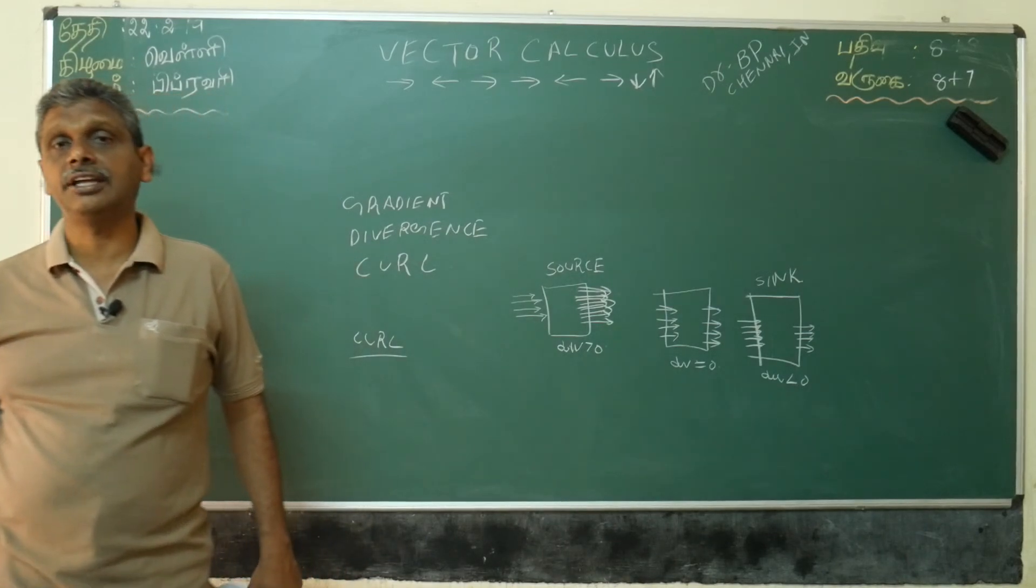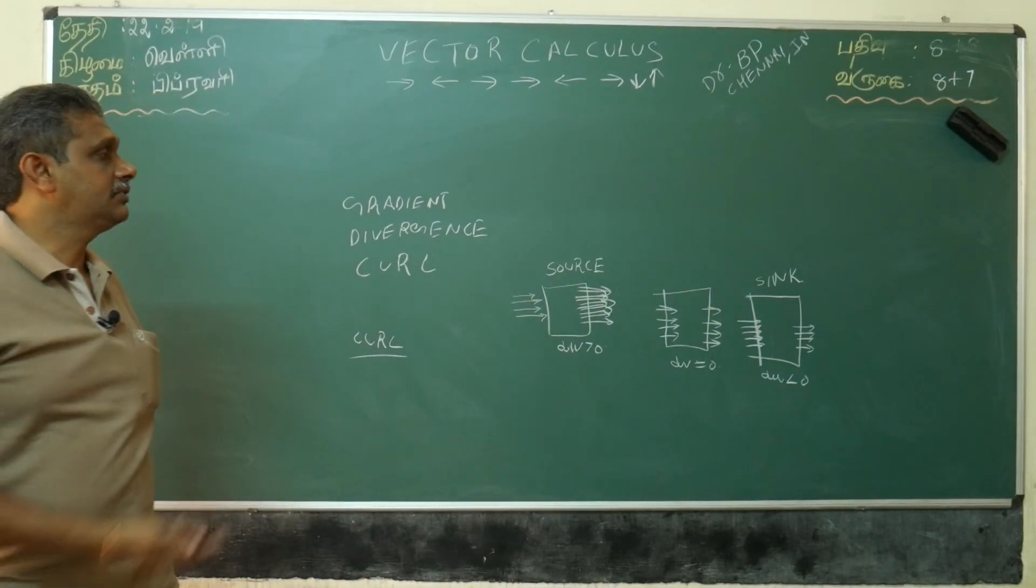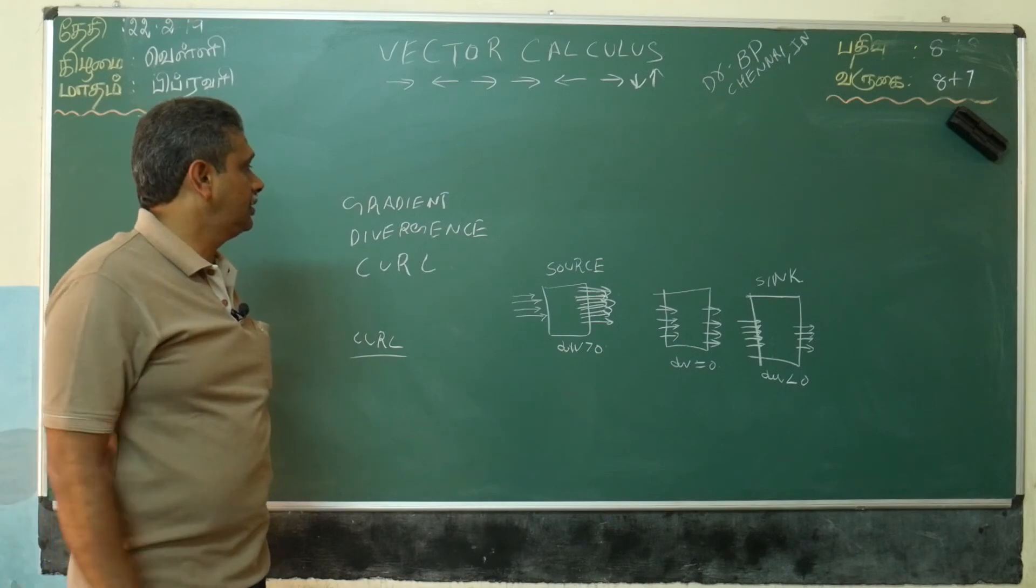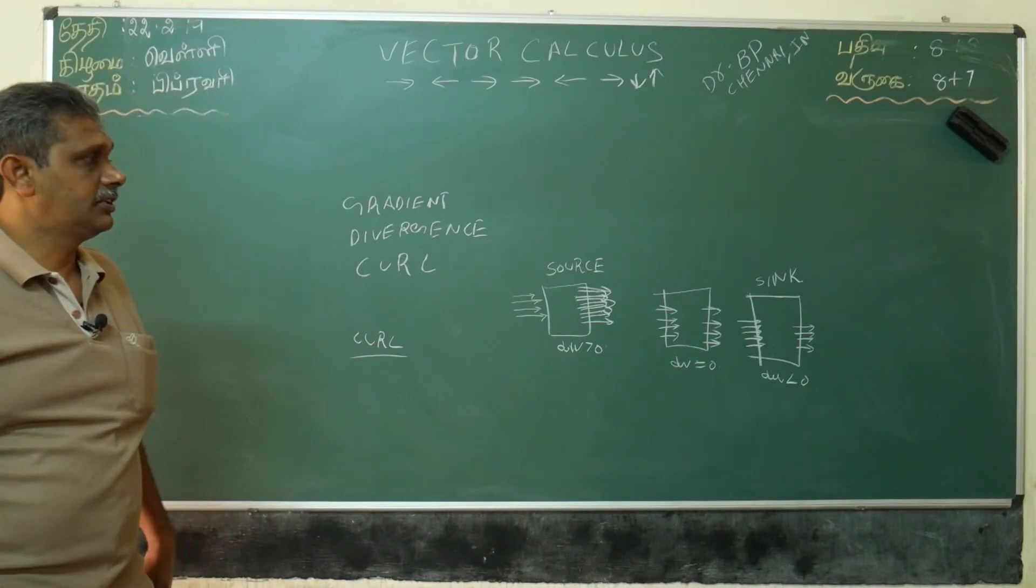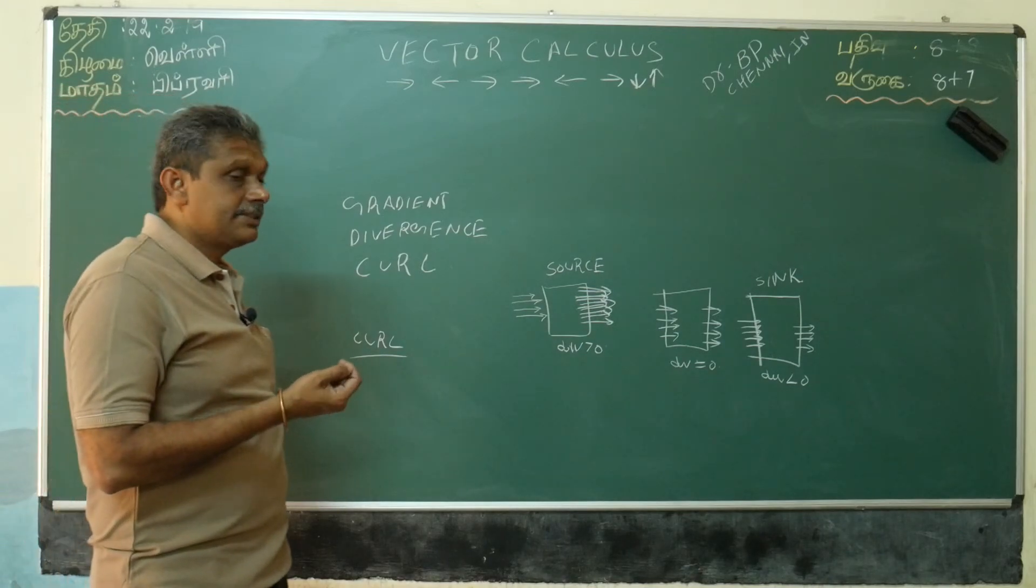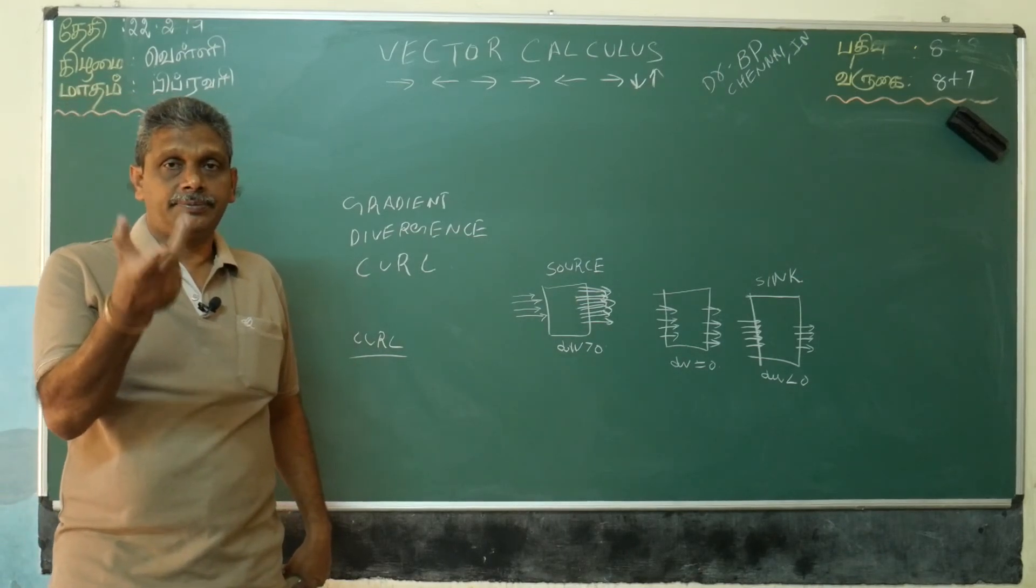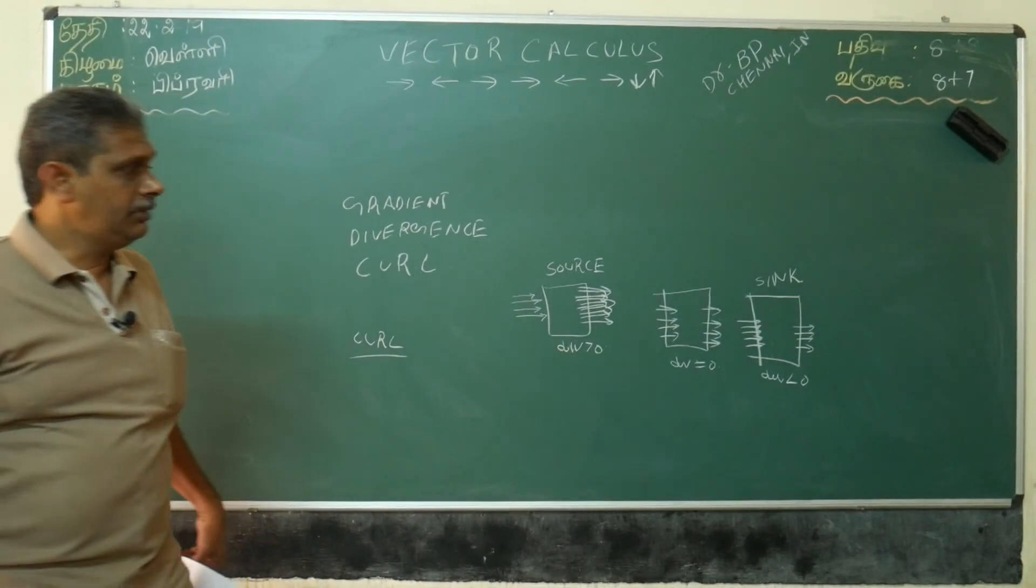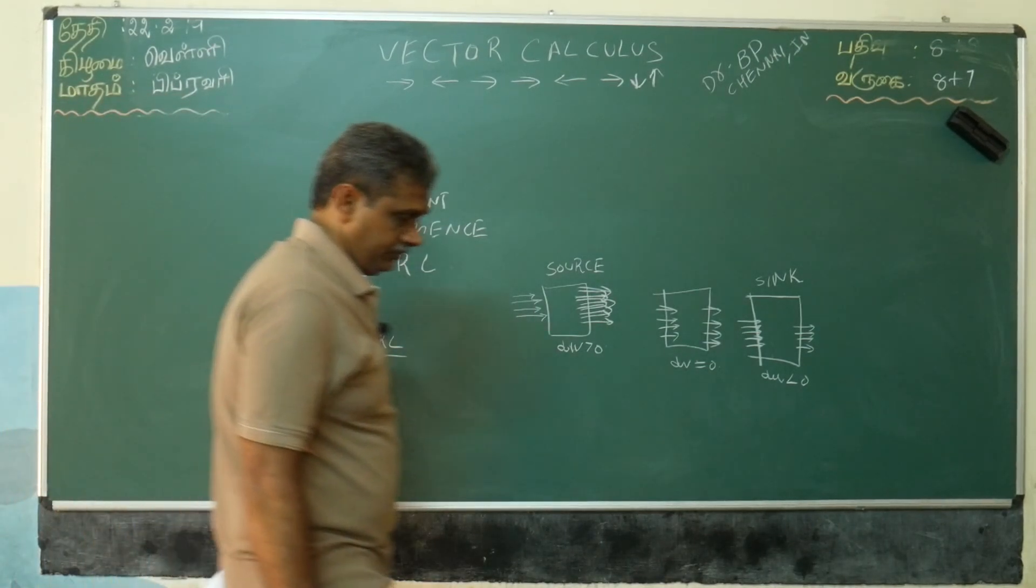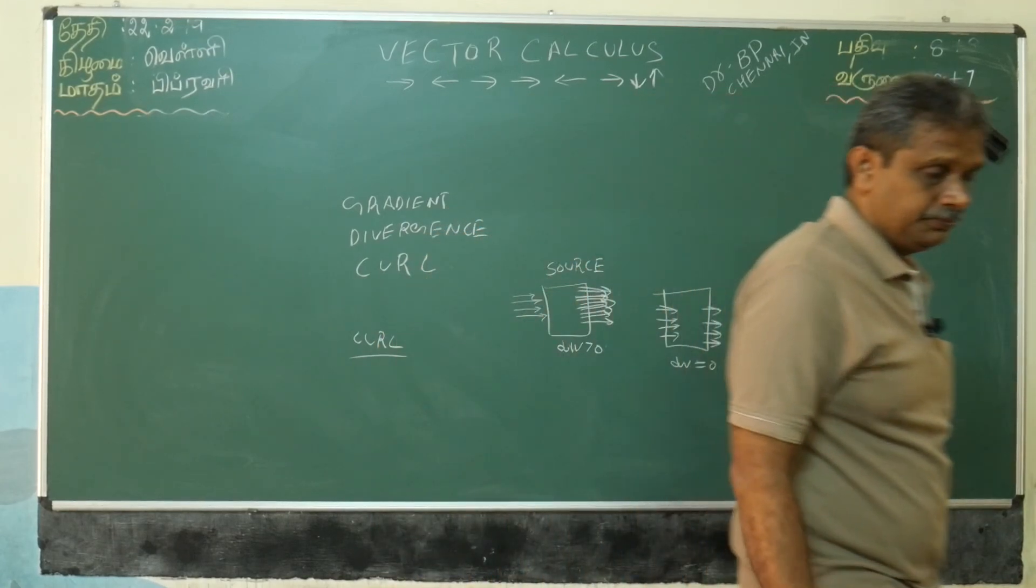If you think, it depends on maths only. Gradient is a normal force. Divergence is spread of force from a particular point. Curl is rotational force. Mathematically we deal, don't worry how to do this. This is the physical meaning of the gradient, divergence, and curl.